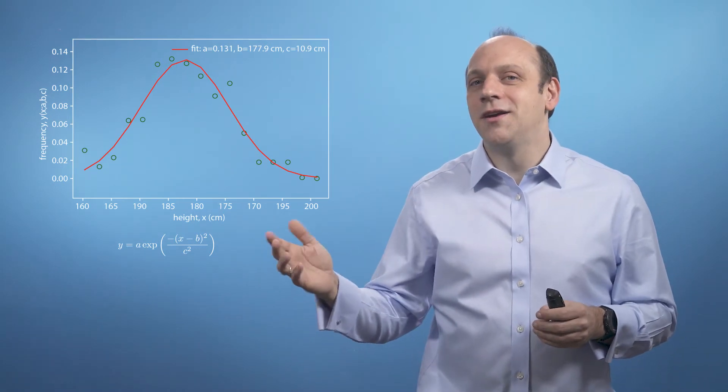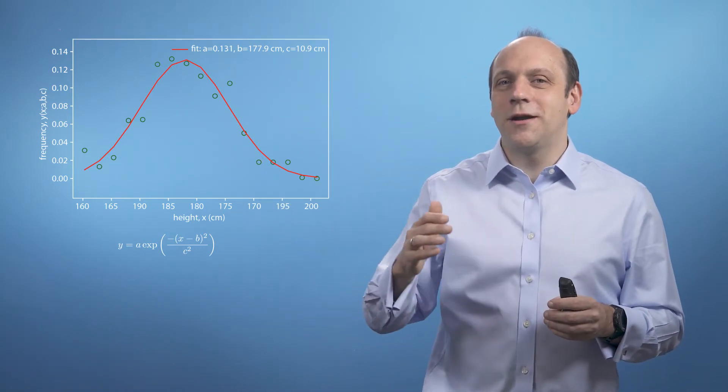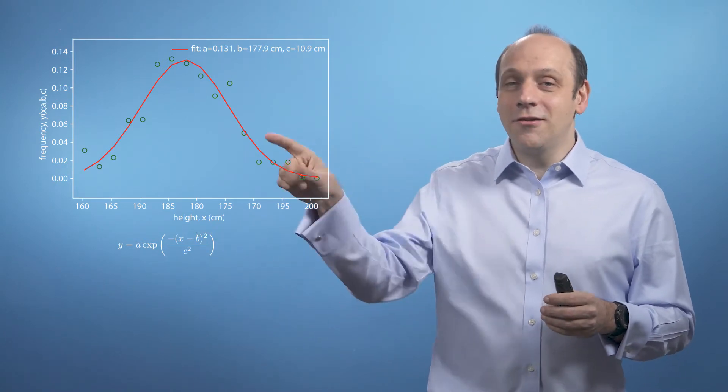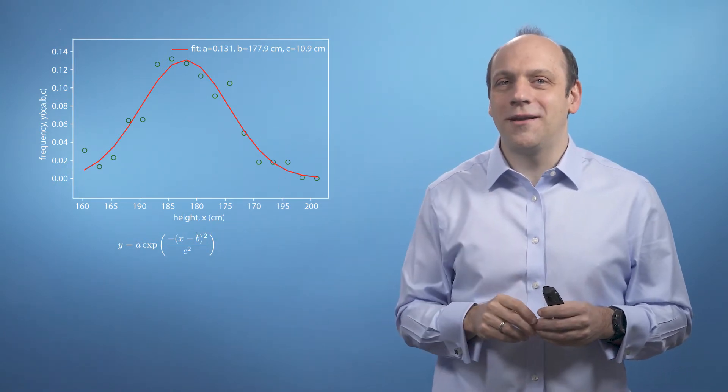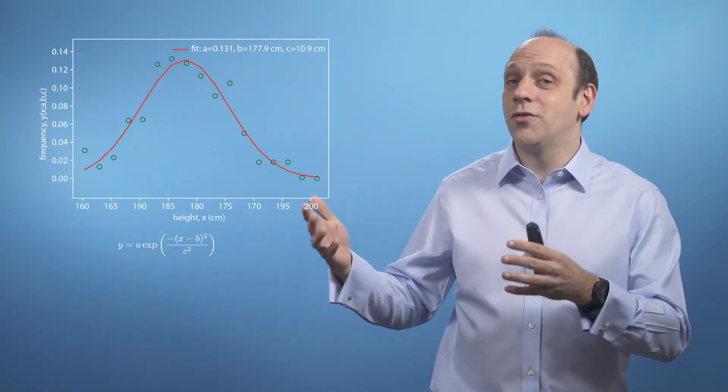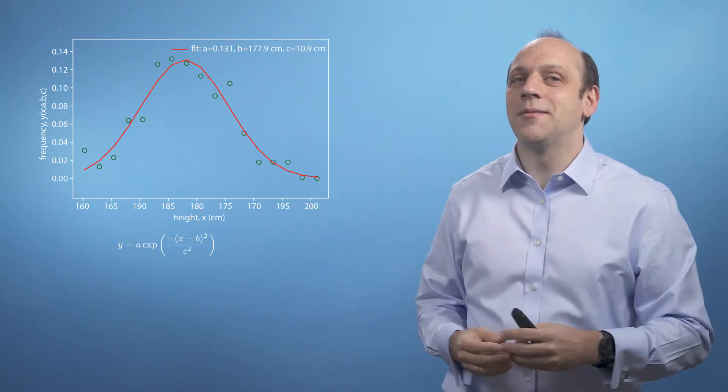Therefore the gradient of chi-squared with respect to the mean b would be 0. So the algorithm wouldn't know what direction to go in. We wouldn't get a sensible answer for the Jacobian or for grad and therefore our algorithm wouldn't know where to go to find the minimum.